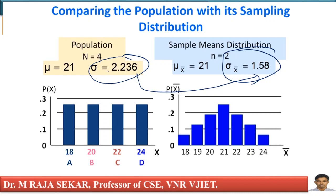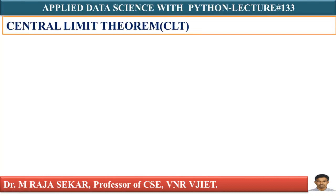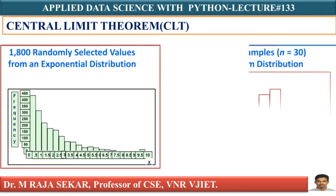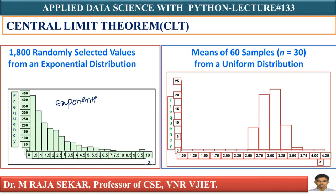When you increase the sample size from 1 to 2, you are getting a normal distribution — it is no longer uniform distribution. In my previous lecture, lecture number 132, I also discussed one more example: this is exponential distribution.